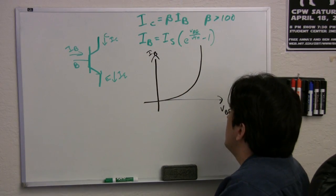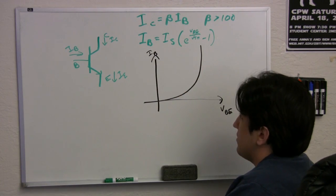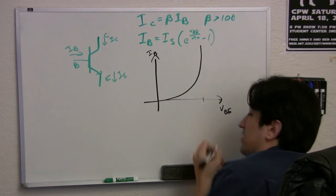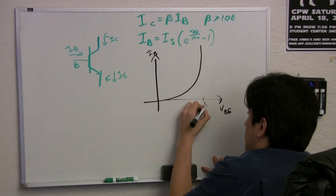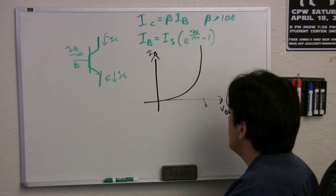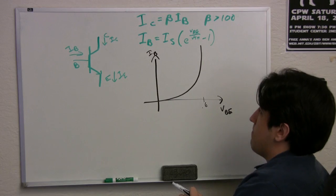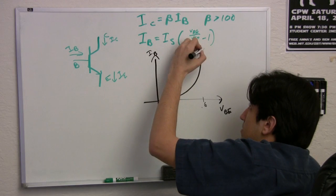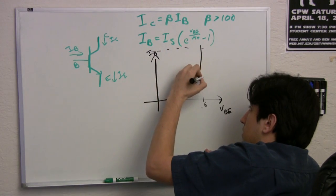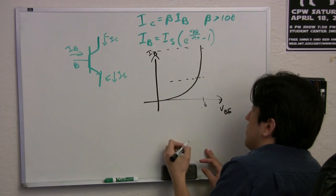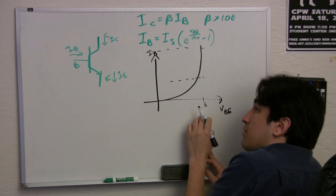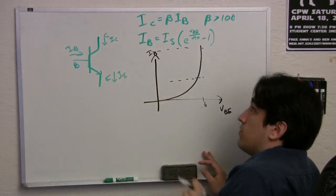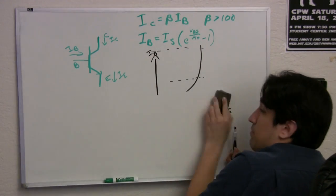Now, why is that important? Well, that's important because if we were to be at a point where VBE is some number, let's call that 0.6, that'll be important later. If we were to start off there, then for a huge range of useful IBs, very big range of currents, VBE only has to change by a little bit for us to get this huge range of useful IBs. You don't know why that's important yet, but it will be.